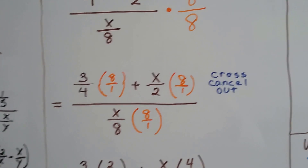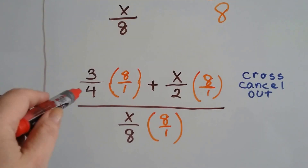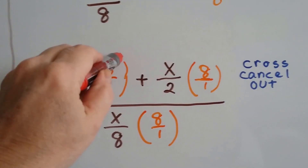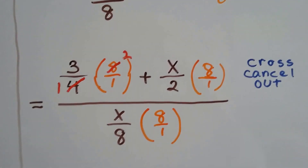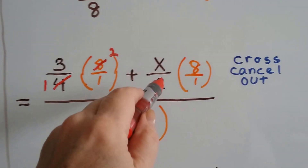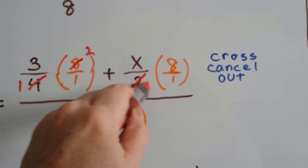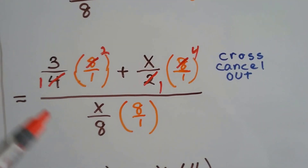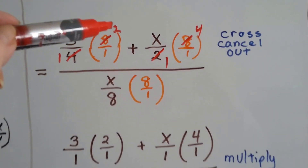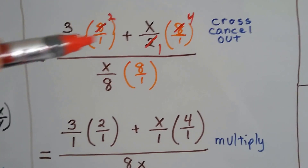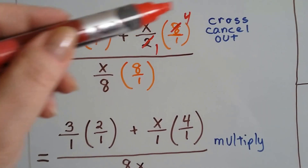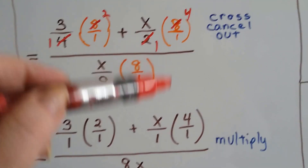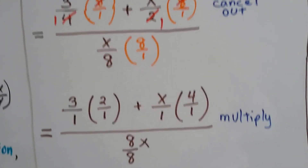But we can also cross-cancel out. For this 4 and this 8, there's 1 four and 2 fours. So, we can cross-cancel it out like that. And for this 2 and this 8, there's 1 two and 4 twos here. So, now we've got 3 times 2 over 1 times 1, plus 4 times x over 1.